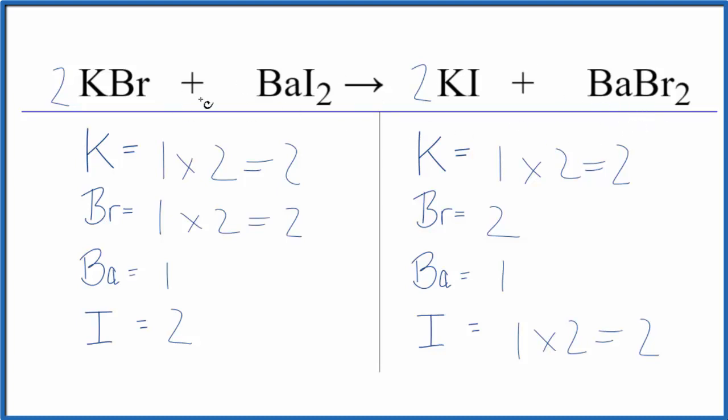But either way if you need to balance this equation KBr plus BaI2, coefficients are 2 1 2 1. This is Dr. B and thanks for watching.